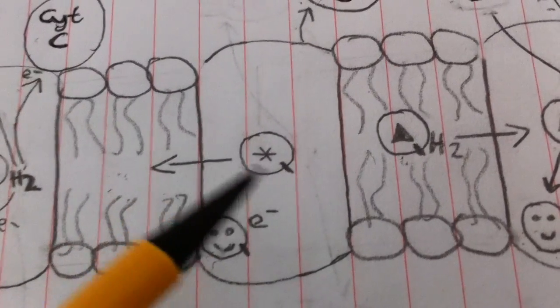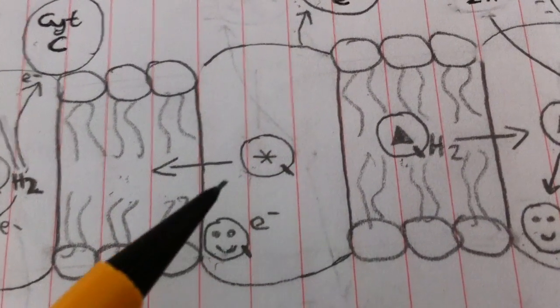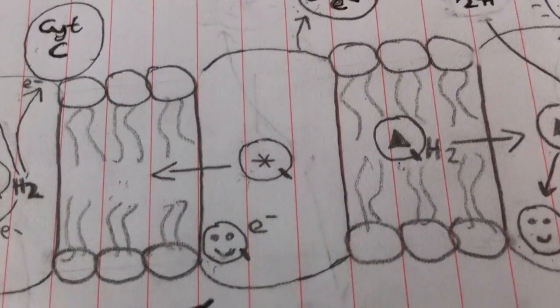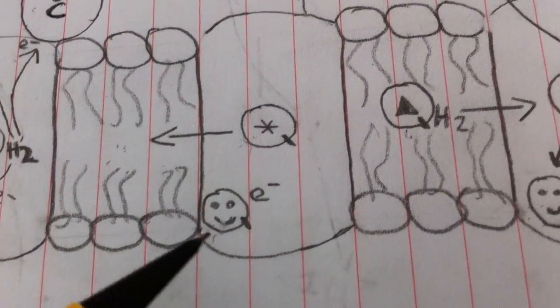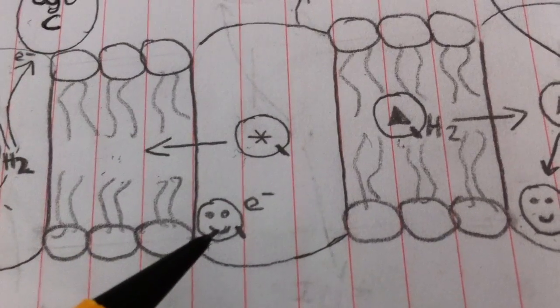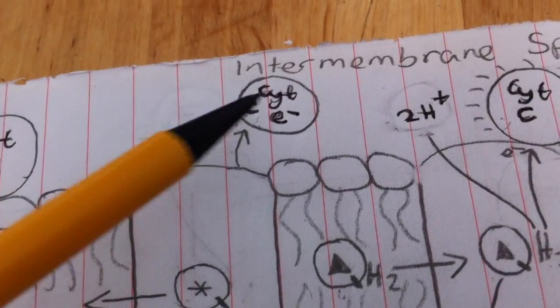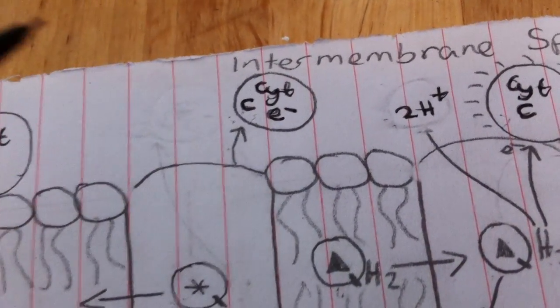So that leaves us with this fully oxidized coenzyme Q, which can now go back into the membrane and get some more electrons from complex 1 or 2. We've got this coenzyme Q down here with just one electron, and we've got cytochrome C up here with an electron that it's now taking to complex 4.